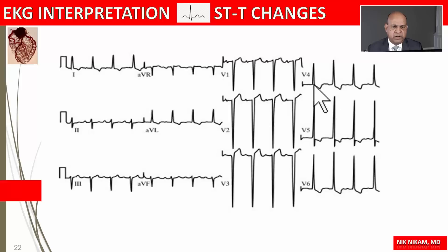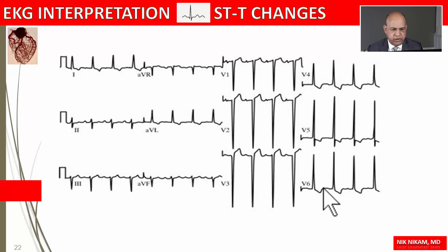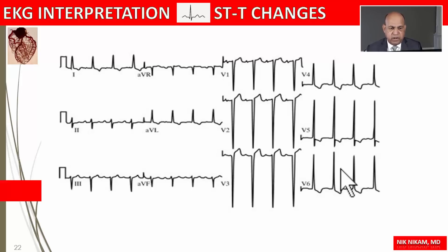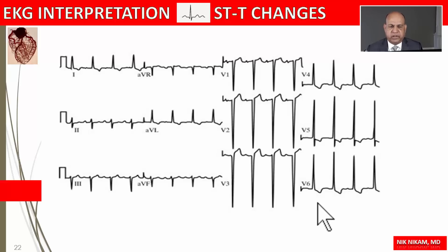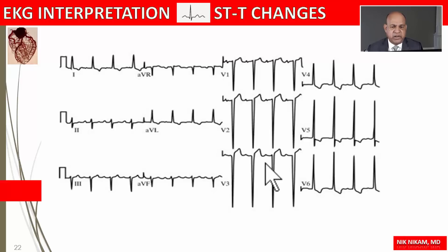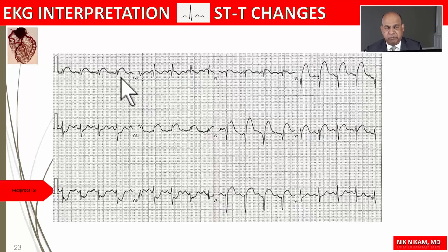Here we have increased voltage in the chest leads along with left axis deviation and secondary ST-T changes — an example of left ventricular hypertrophy with strain, showing down-sloping ST depression with T wave inversion related to LVH. These changes may in fact represent subendocardial ischemia related to elevated left ventricular diastolic pressure. It's not uncommon to see ST depression and T wave inversion in the anterior leads in patients with hypertrophic cardiomyopathy or apical hypertrophy of the left ventricle.